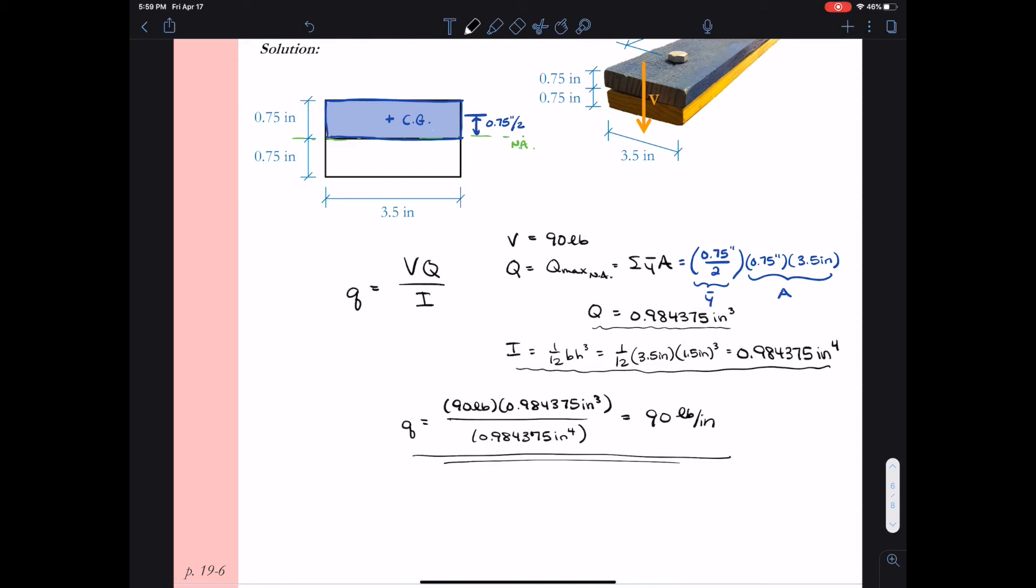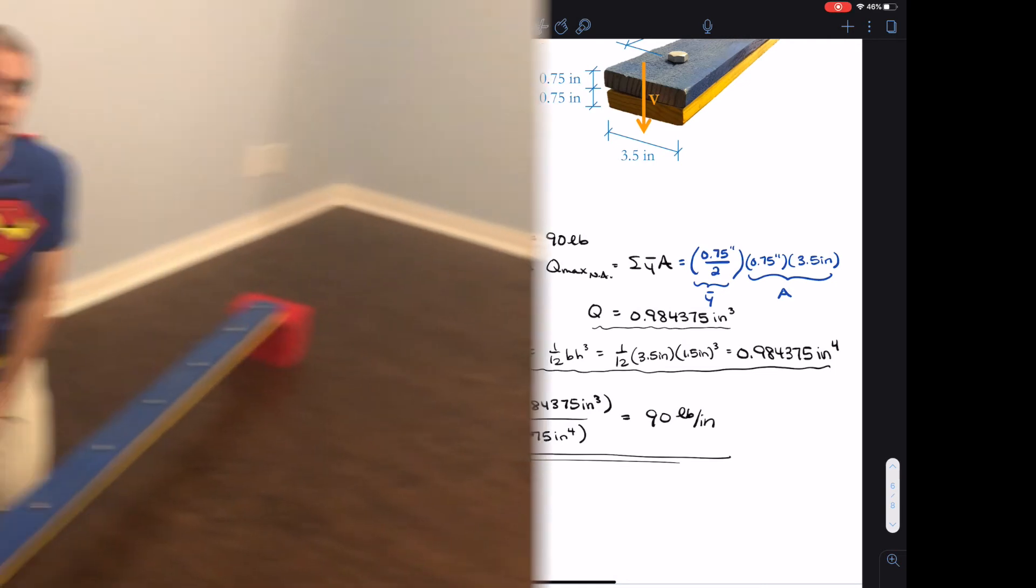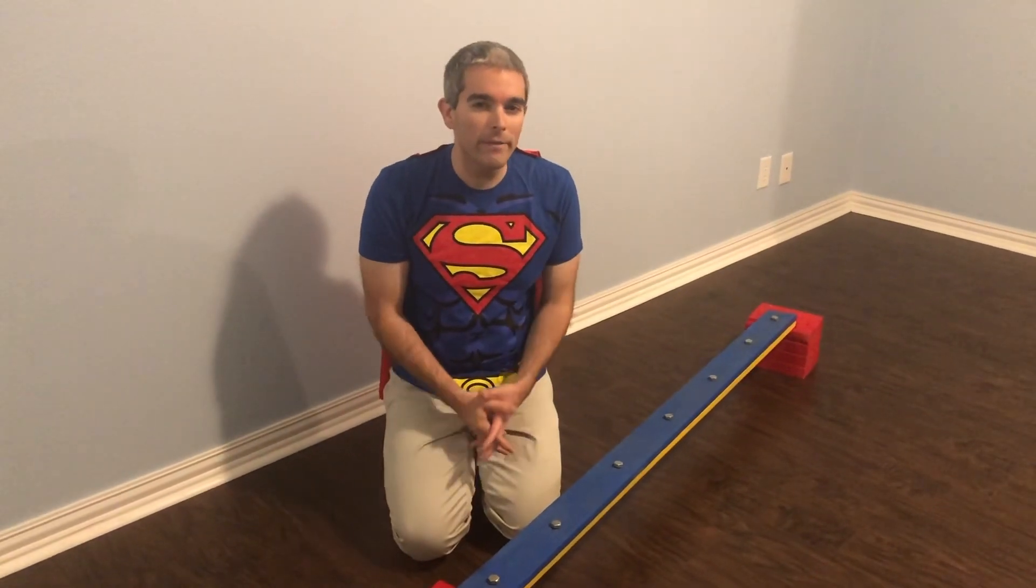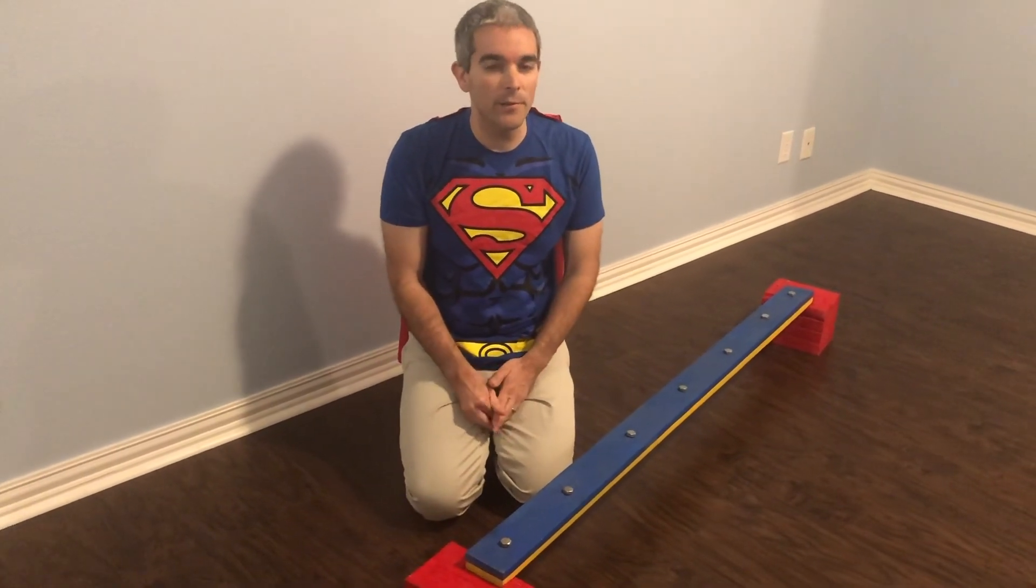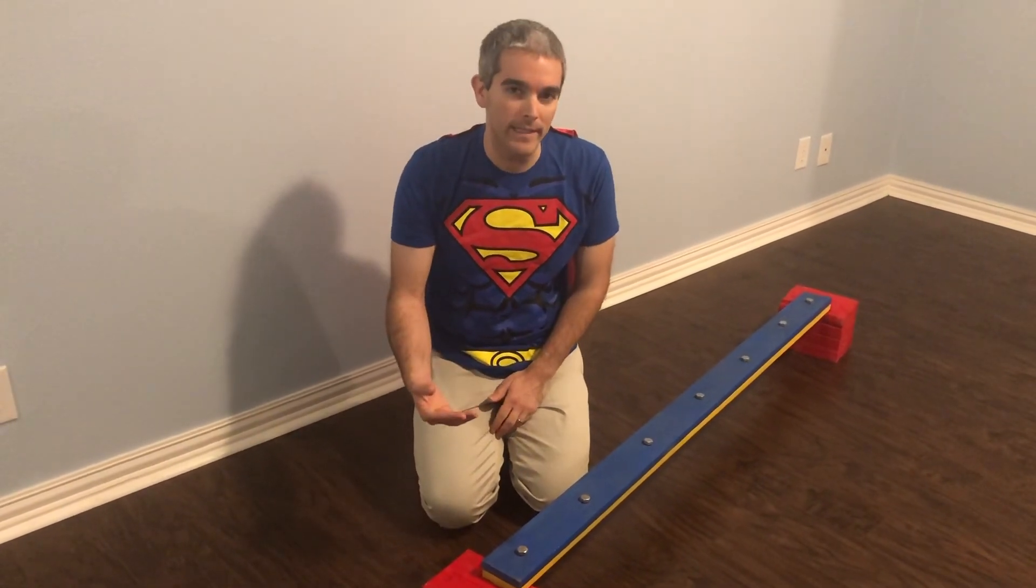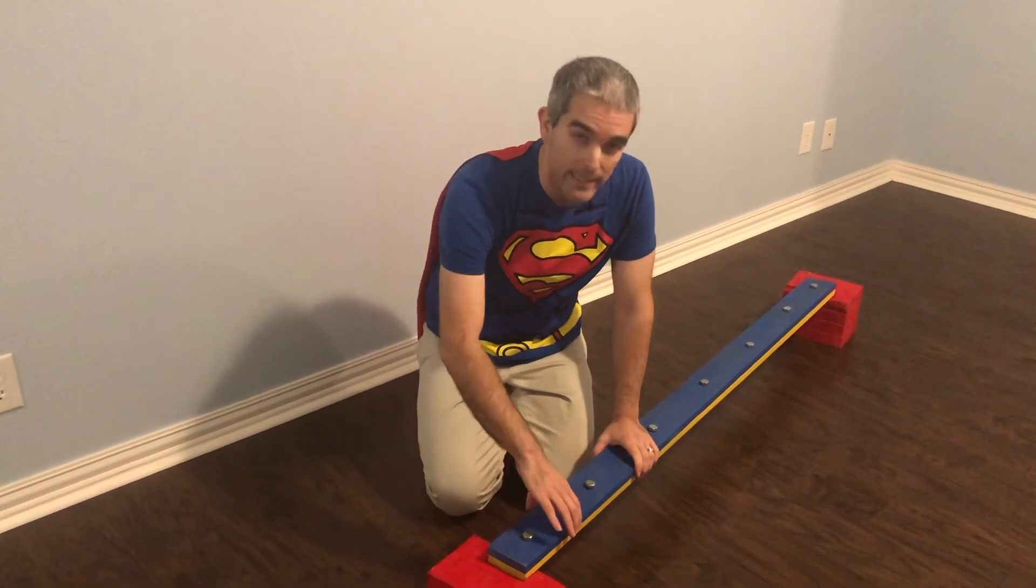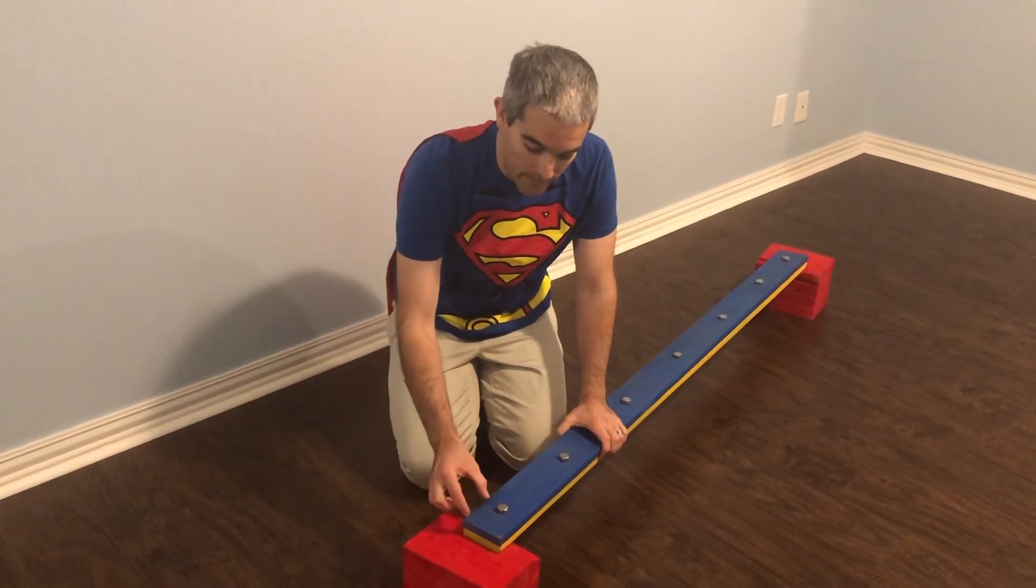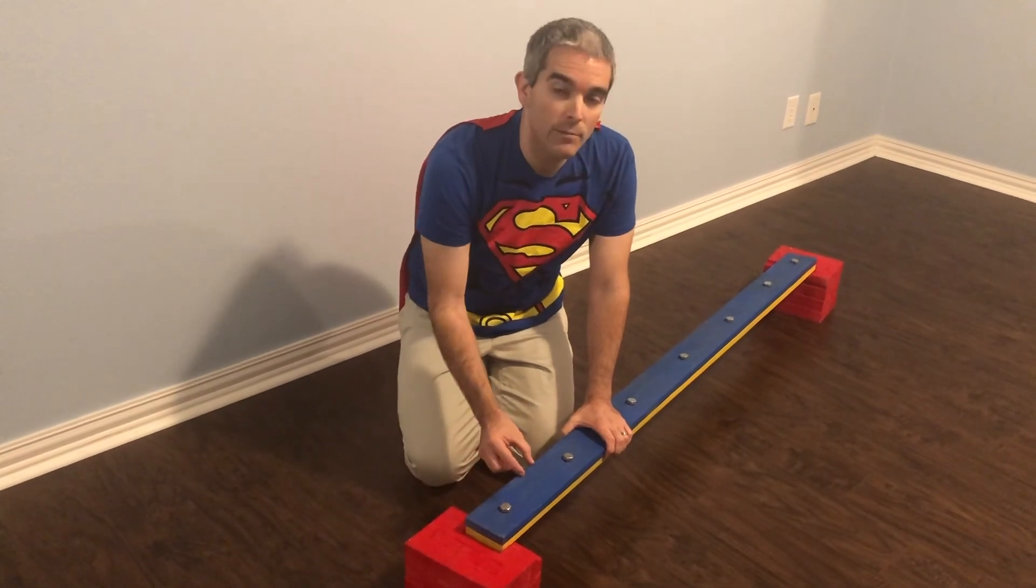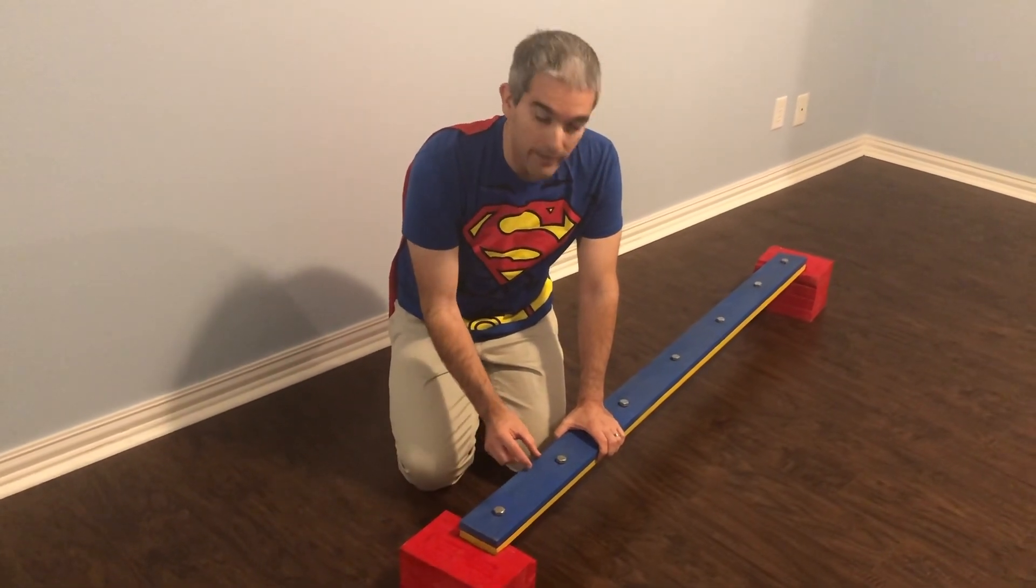So what does this 90 pounds per inch mean? Why do we need a tributary width for the bolt? Well in our calculations we determined that the shear flow was 90 pounds per inch. So basically the shear force between these two boards is 90 pounds per every inch as we move along the length of the beam.